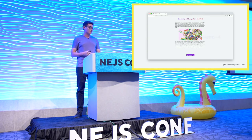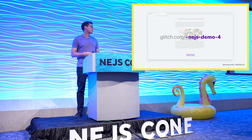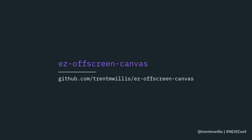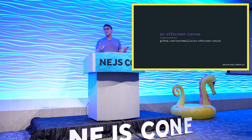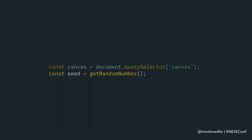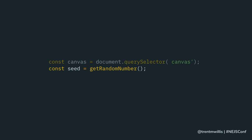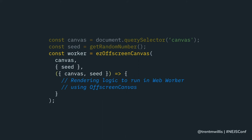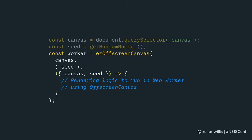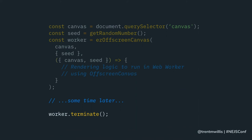There's another demo that looks exactly like the last one but uses this method — you can check it out at nejs-demo4 on Glitch. Setting up web workers can be confusing, so I set up a simple package called easy-off-screen-canvas to make it a lot easier. You just get your canvas element, generate a seed value or whatever props you want to pass in, then pass them into the easyOffScreenCanvas method along with a render function. That function will become a web worker executing in a different thread, automatically passed the off-screen canvas and any additional props. When you're done, simply call terminate and it cleans everything up.